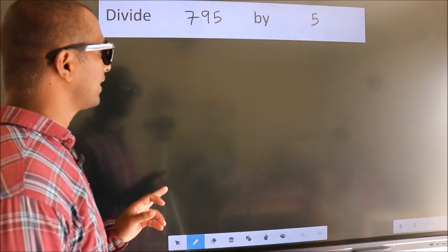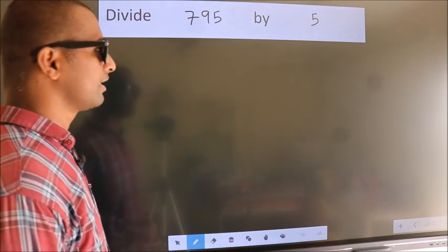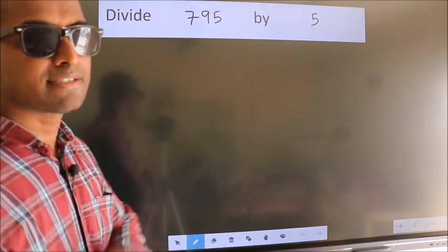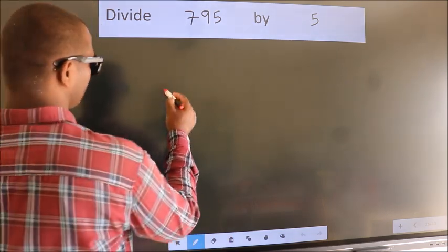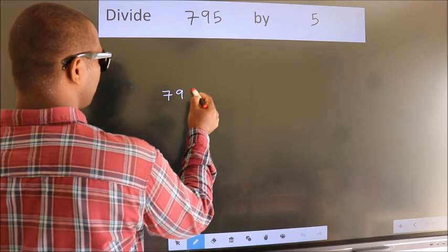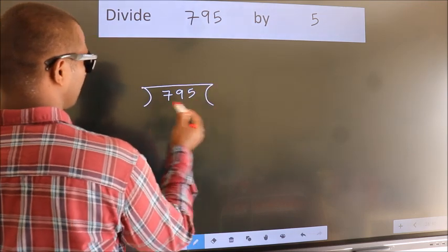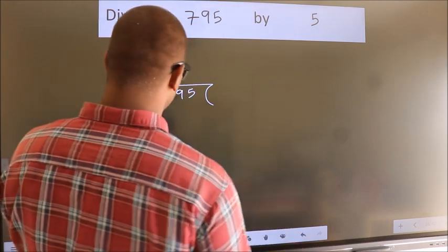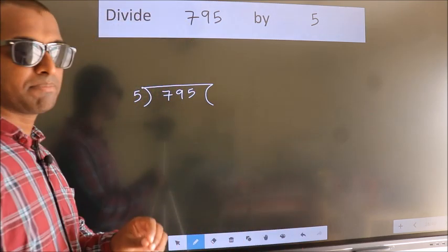Divide 795 by 5. To do this division, we should frame it in this way. 795 here, 5 here. This is your step 1.